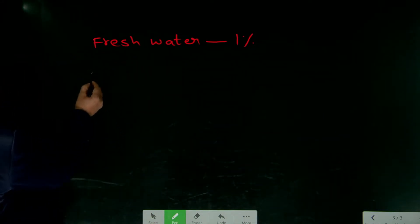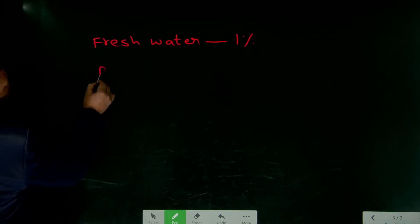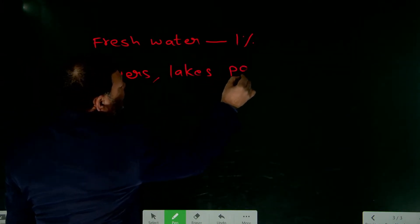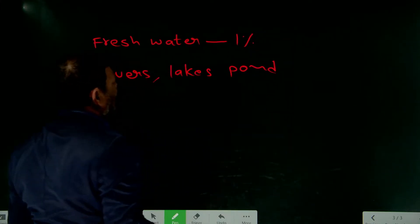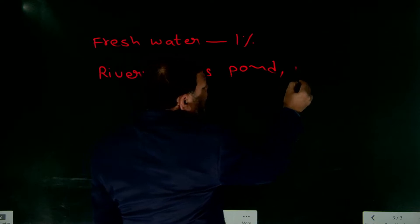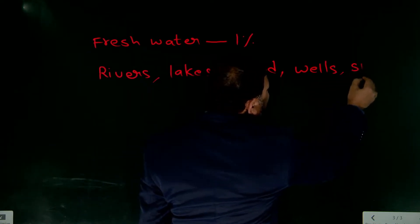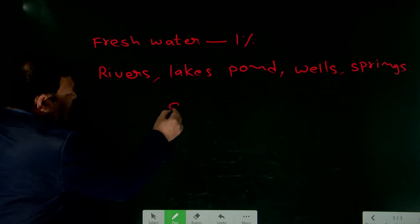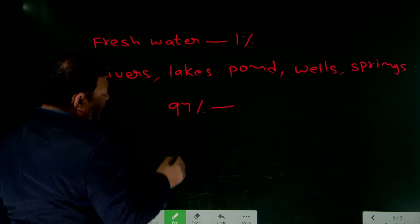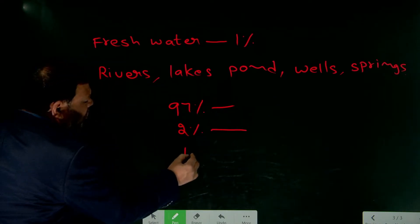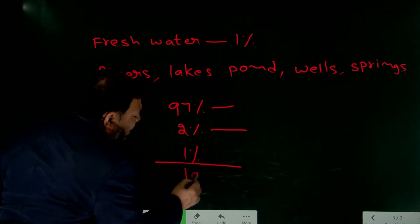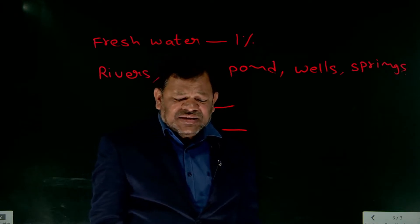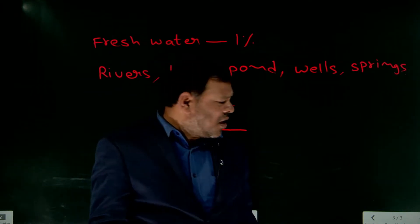Where is this fresh water? Fresh water is present in rivers, lakes, ponds, wells, and springs. Only 1% is fresh water, so water is very precious and we must save and conserve it.